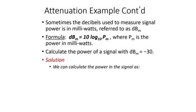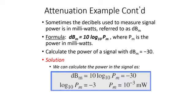Sometimes decibels are used to measure signal power in milliwatts, referred to as dBm or decibel milliwatts, calculated by: dBm equals 10 times log base 10 of p sub m, where p sub m is the power in milliwatts. If we want to calculate the power of a signal with dBm equal to negative 30, we set 10 times log base 10 of p sub m equal to negative 30, divide by 10 to get log base 10 of p sub m equals negative 3, and using the exponential form, p sub m equals 10 to the negative 3 milliwatts.